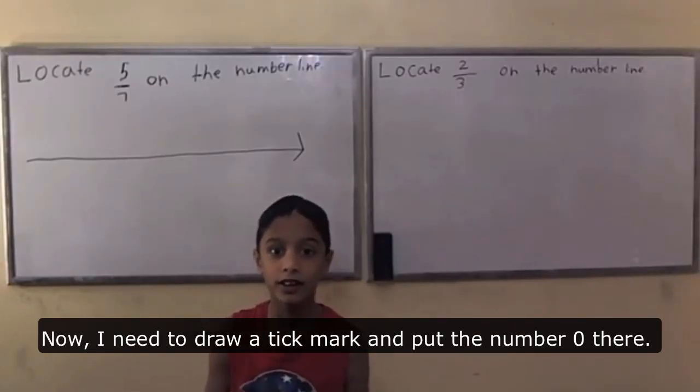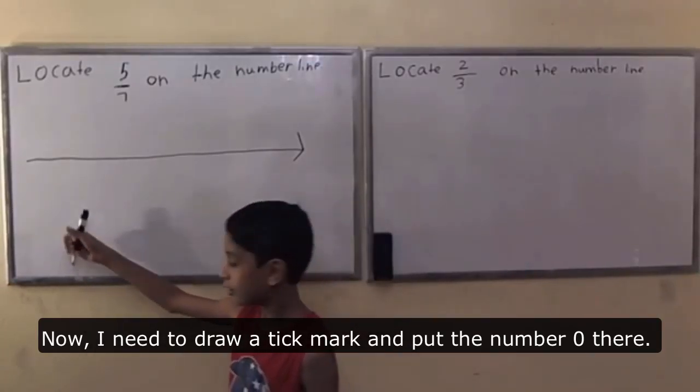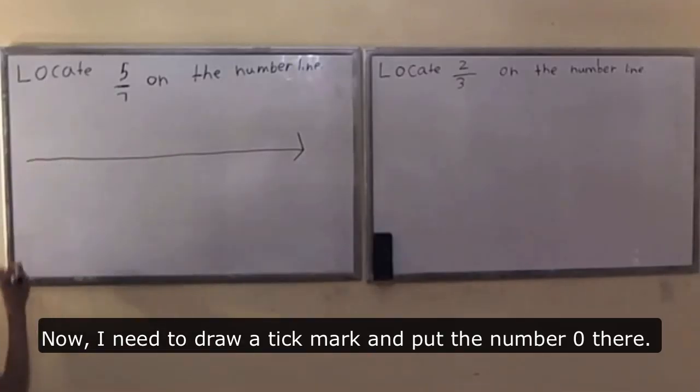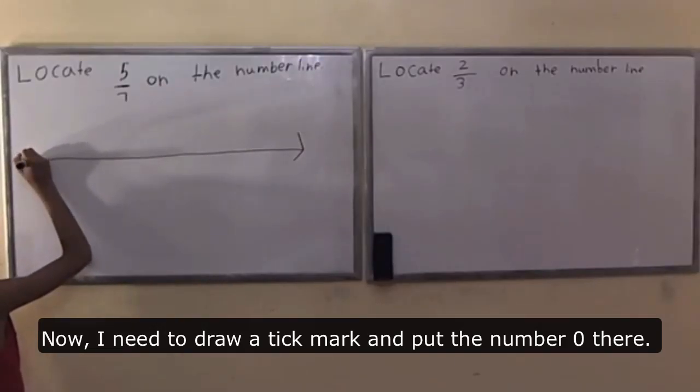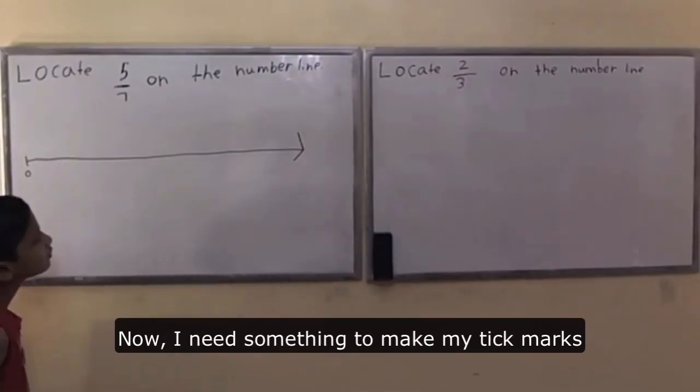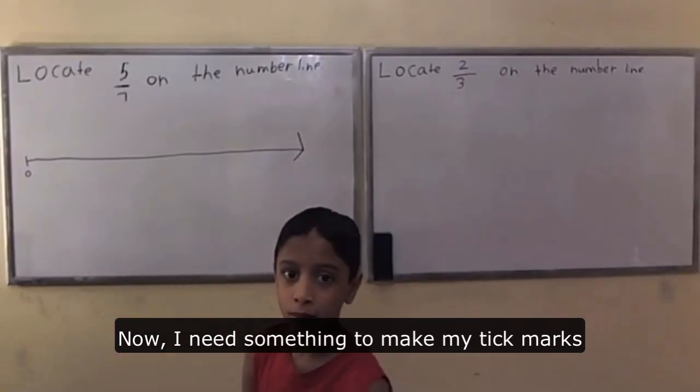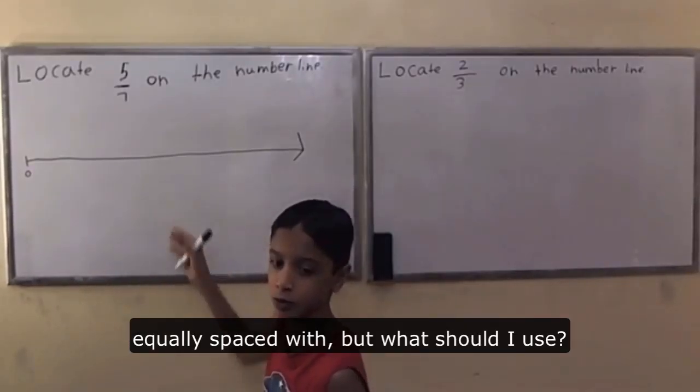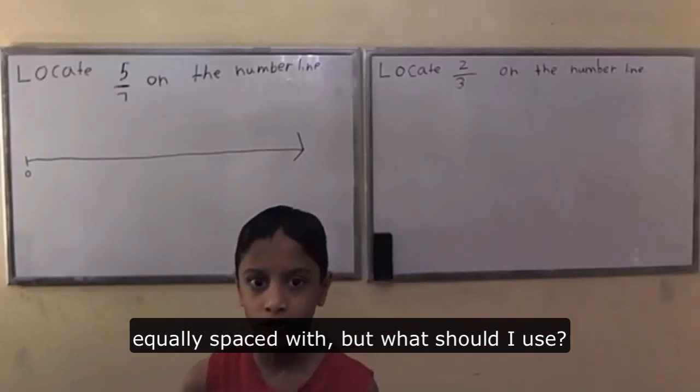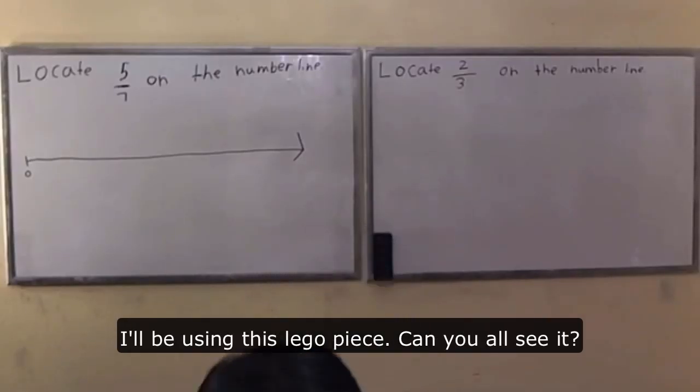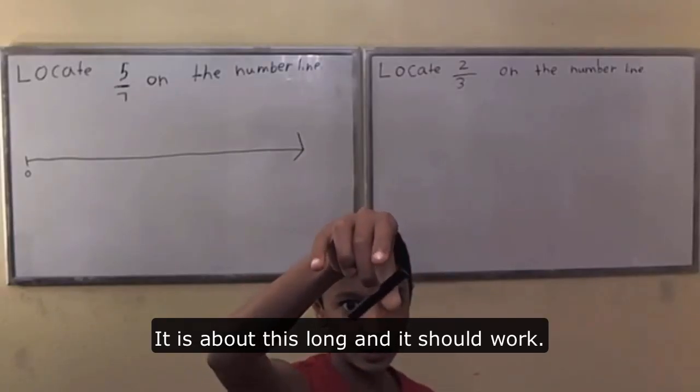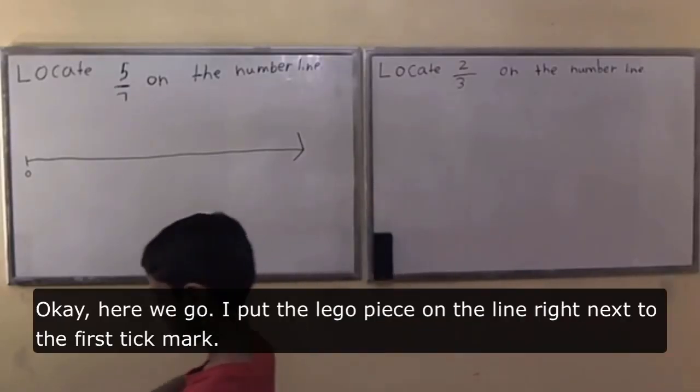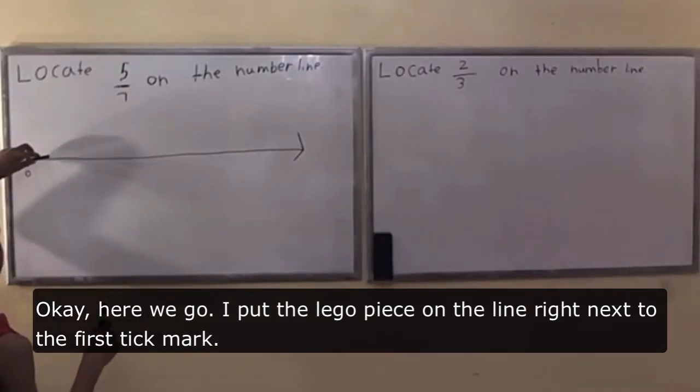Now I need to draw a tick mark and put the number 0 there. Now I need something to make my tick marks equally spaced with. But what should I use? I'll be using this Lego piece. Can you all see it? It's about this long and it should work. Okay, here we go.